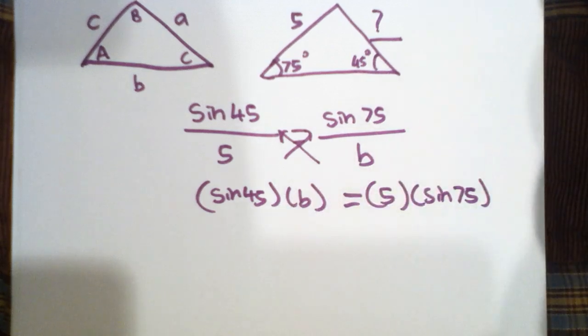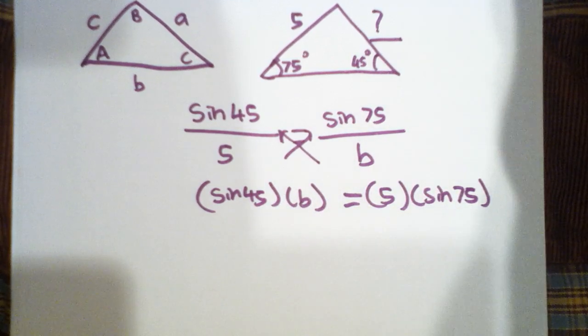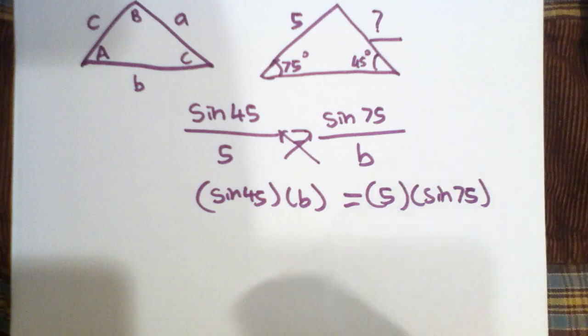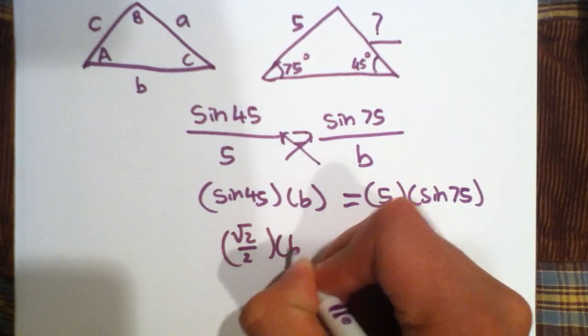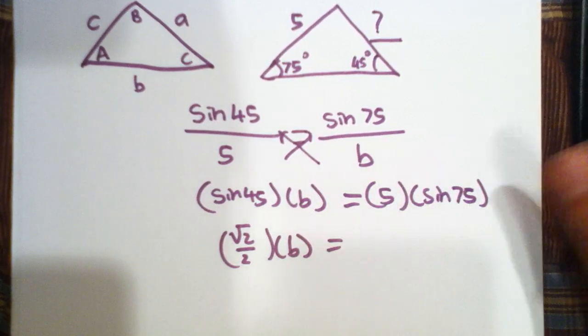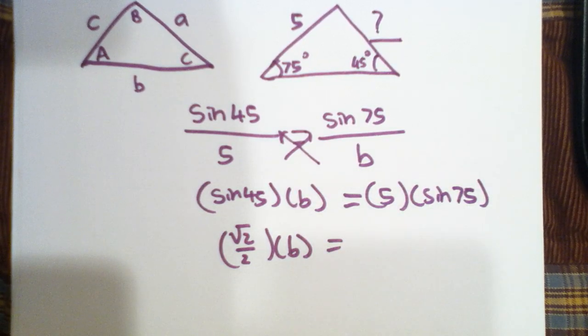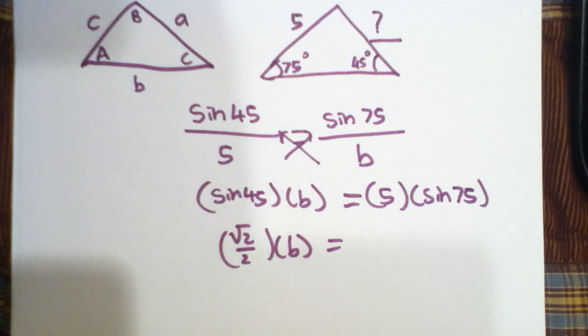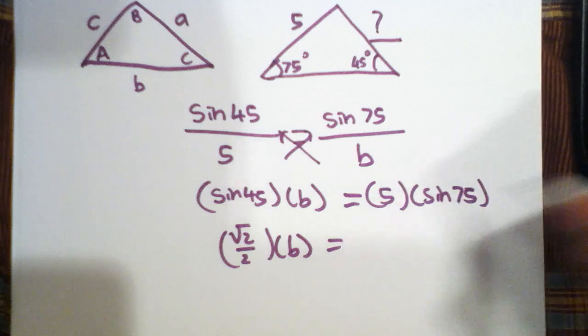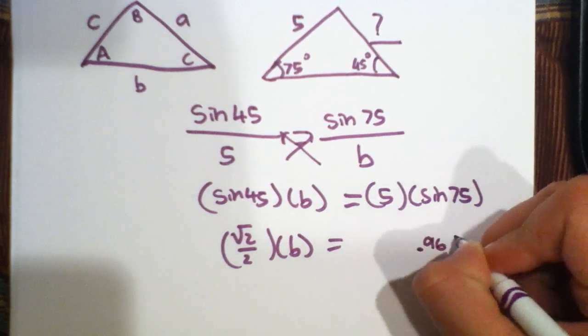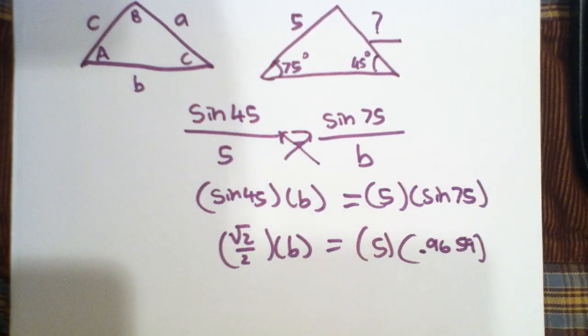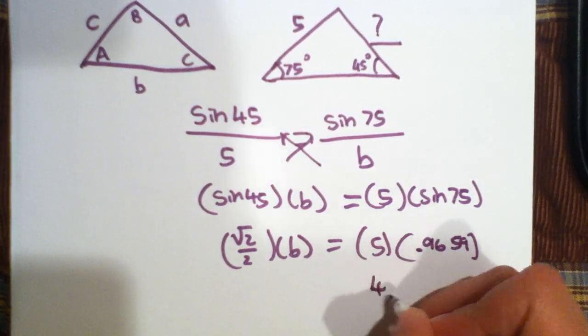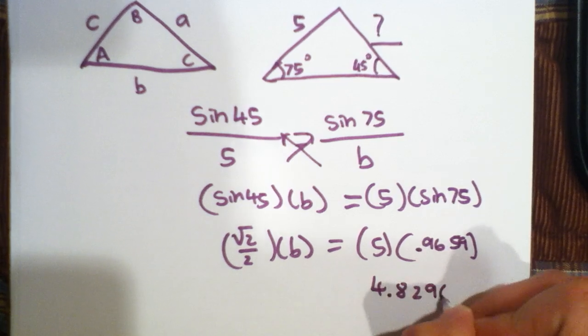Now, sine forty-five is the square root of two over two. And sine seventy-five, if we plug it in our calculator, is approximately 0.9659. So, if we multiply 0.9659 by five, we get approximately 4.8296.